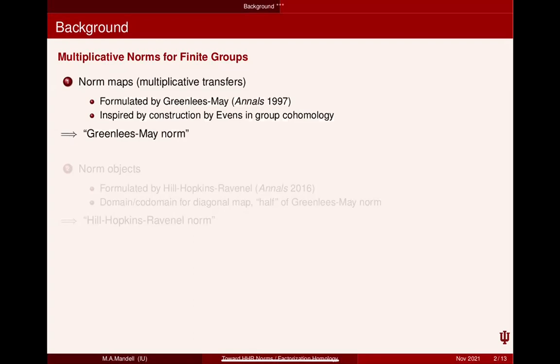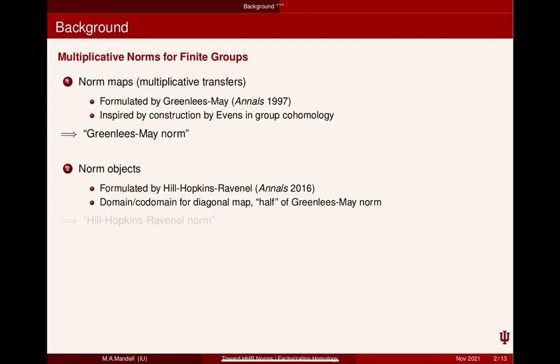These norms are maps — let's call them Greenlees-May norms. The norms I'm going to talk about today are objects, not maps. These were formulated by Hill-Hopkins-Ravenel in their 2016 Annals paper and they're the domain and codomain for a diagonal map, which is some portion of the map in the Greenlees-May norm. I call these Hill-Hopkins-Ravenel norms to distinguish from the Greenlees-May norms, but of course they're closely related things.